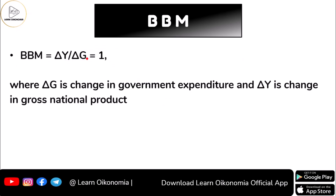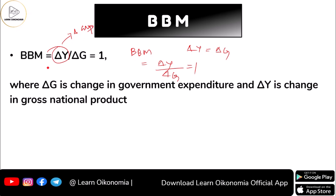The balanced budget multiplier is equal to one, and this is what Keynes also says. When we say BBM equals delta Y divided by delta G, since delta Y is equal to delta G, this value would be equal to 1. Here delta Y means change in GNP, and delta G means change in government expenditure.